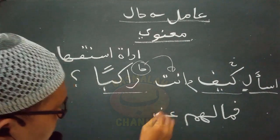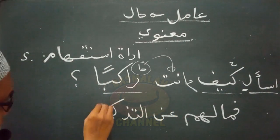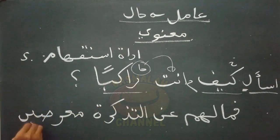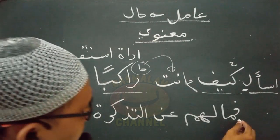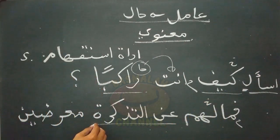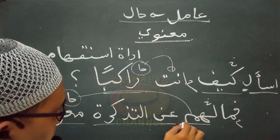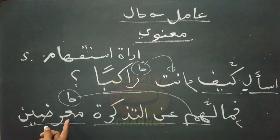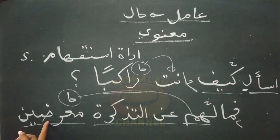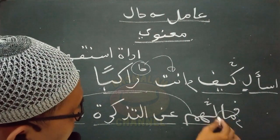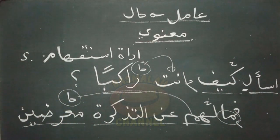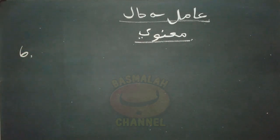Contoh lain dari Al-Quran: 'fama lahum anit tadkiroti mu'ridin' - maka apakah bagi mereka dari peringatan dalam keadaan berpaling? Lafat mu'ridin adalah hal yang menjelaskan keadaan sahibul halnya yaitu domer hum, wajib dinasobkan. Karena bentuknya berupa jama', tanda nasobnya menggunakan ya. Amil yang menasobkan lafat mu'ridin adalah adat istifham yang berupa ma'. Ini adalah yang kelima, berupa adat istifham.